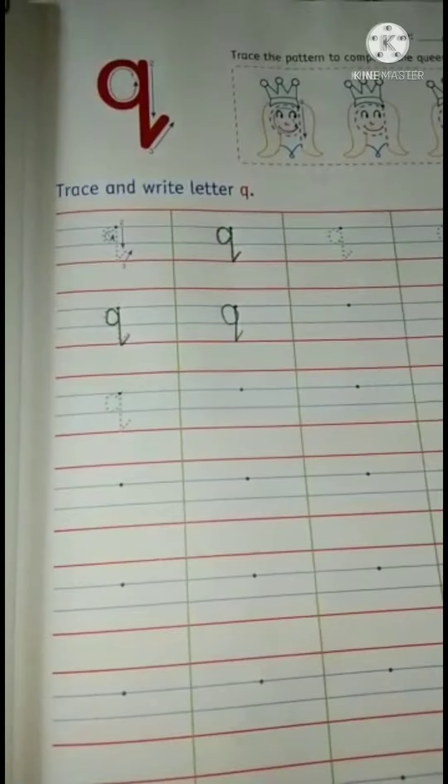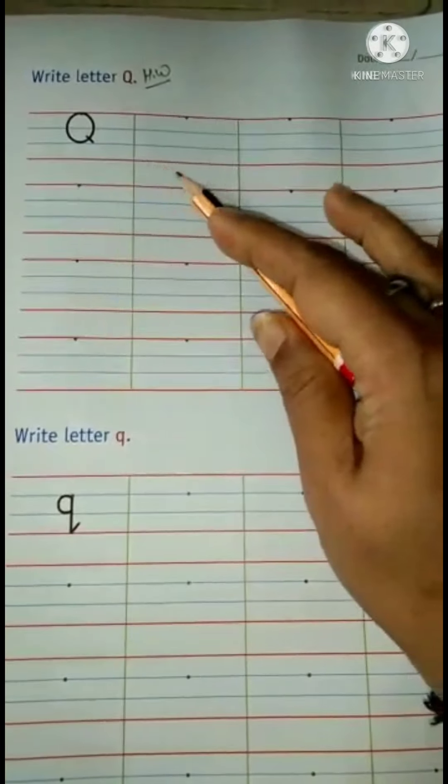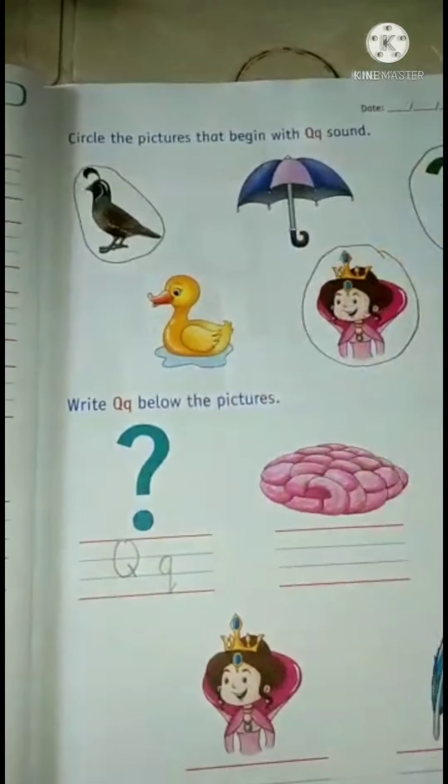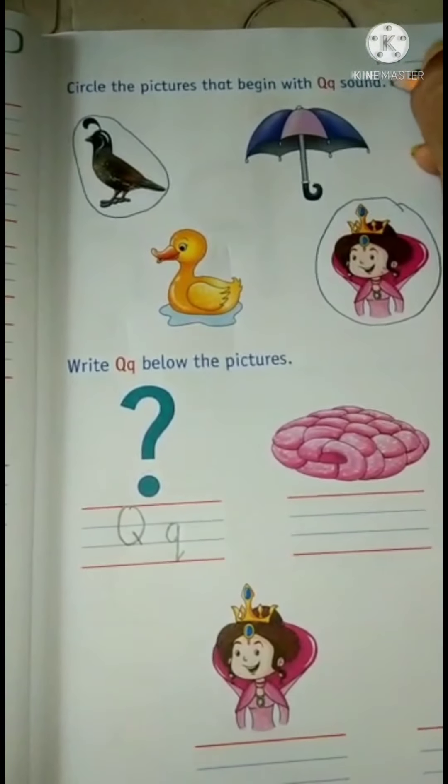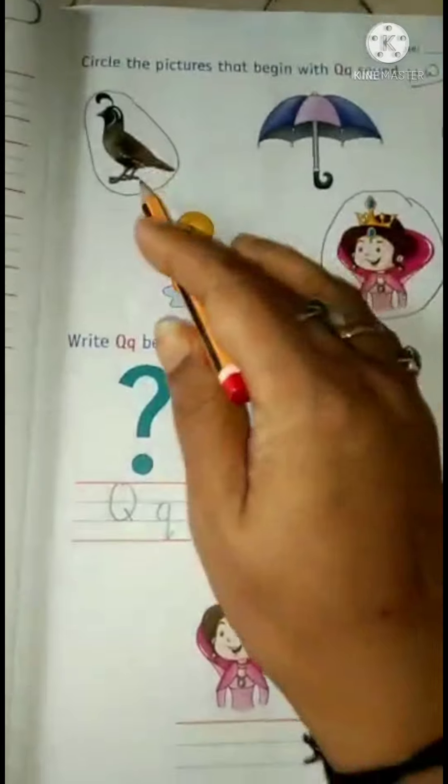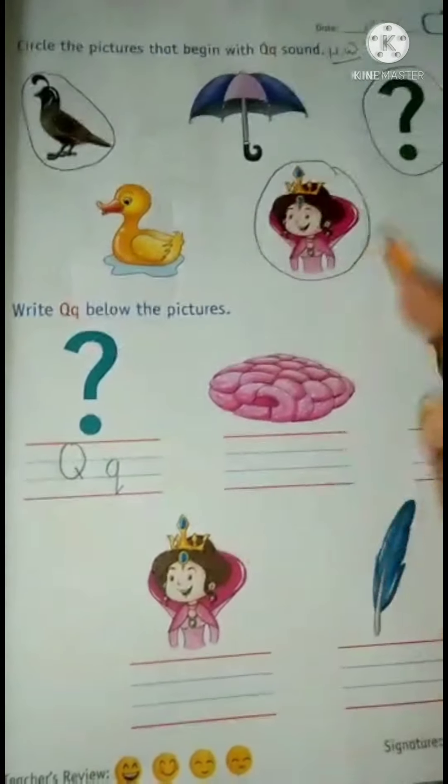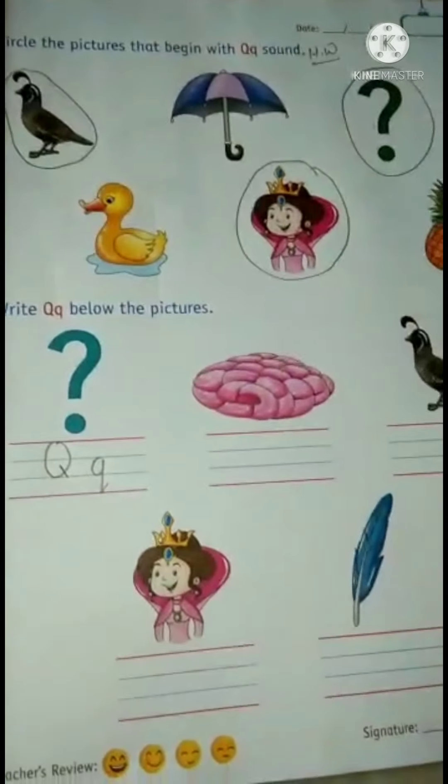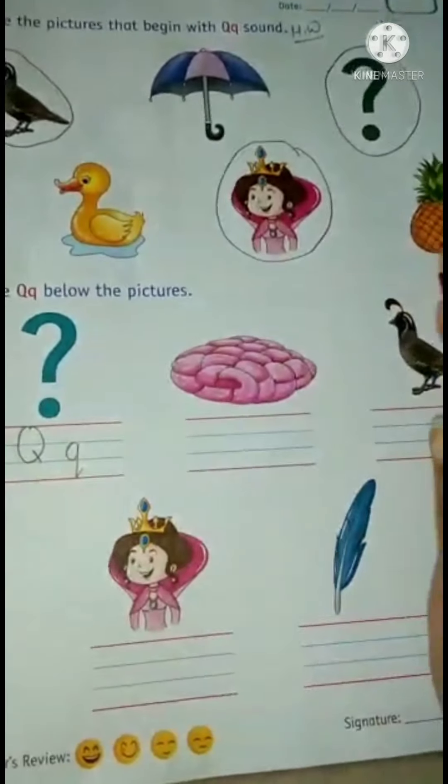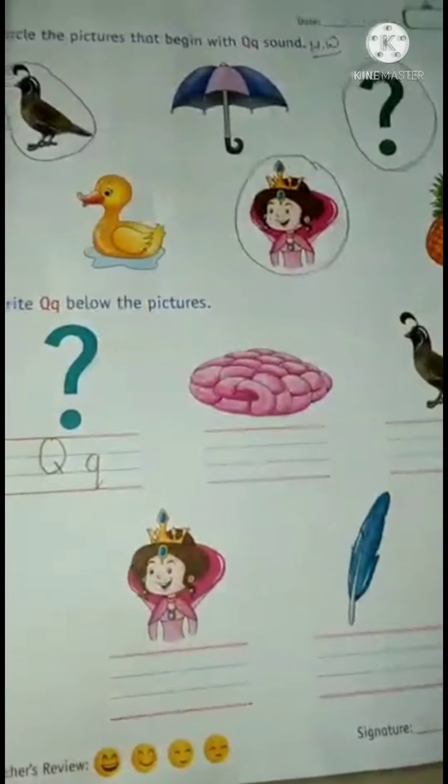Now see on the next page. This page is your homework, capital letter Q and small letter Q. So please do it. Now we will see on this page, circle the pictures that begin with the Q sound. Q for quail, Q for queen, Q for question mark. So we will circle these three pictures only. Umbrella, duck, and pineapple don't start with Q, so we will not circle that. Okay?